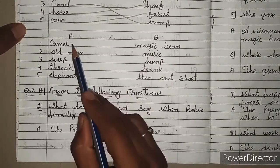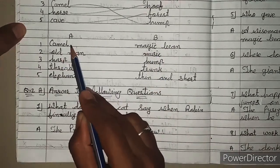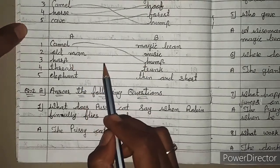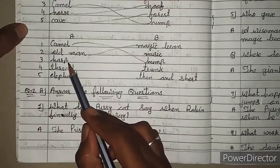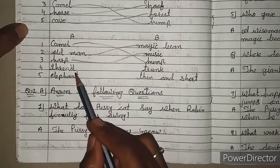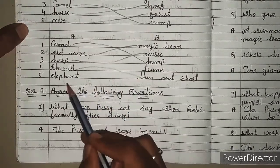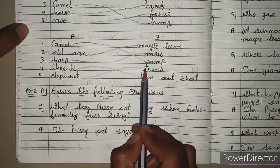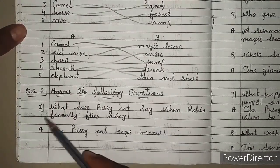Now second match. A-B. 1. Camel — Camel तो क्या आएगा? Hump. 2. Old man — Old man के पास क्या था? Magic bean. 3. Harp — Harp तो क्या आएगा? Music. 4. Thread — Thread कैसी थी? Thin and short. 5. Elephant — Elephant क्या हिला रहा था? अपनी trunk.